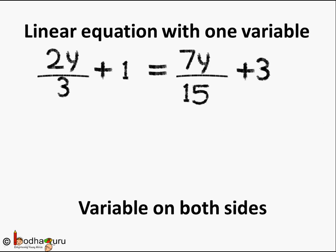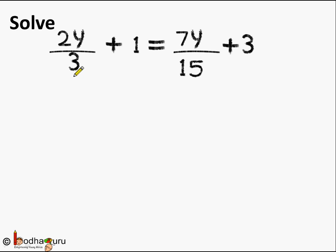On the LHS we have 2 by 3y and on the RHS we have 7 by 15y. Let us solve it. So 2y by 3 plus 1 is equal to 7y by 15 plus 3.